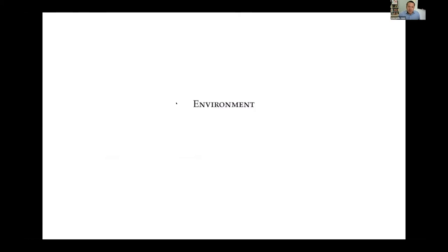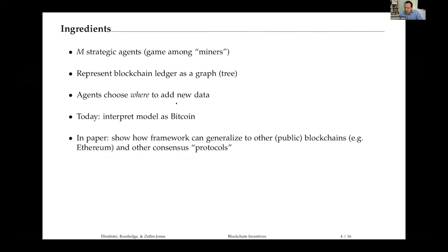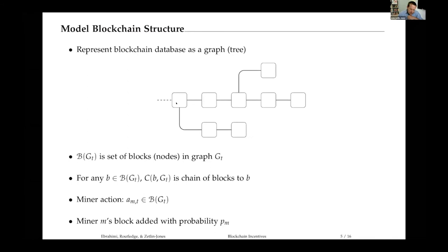So time is short, so let me just dive in. We're thinking of a dynamic extensive form game where all of the players are strategic or rational. We're going to focus on the game among miners—we'll think of there being M of them. We're going to think very seriously about the blockchain ledger represented as a graph, really a tree. The strategic choice we're thinking about in this framework is agents' decisions of where to add a new block of transactions. For most of my talk, I'll interpret this as Bitcoin—it's easiest to think of a transaction as Alice sends Bob one Bitcoin—but we can generalize this to other types of public blockchains.